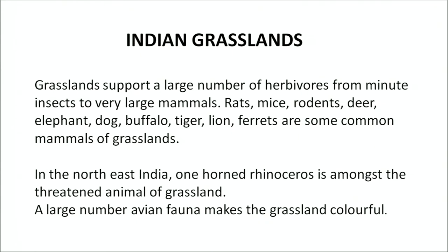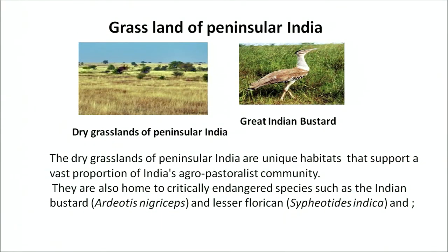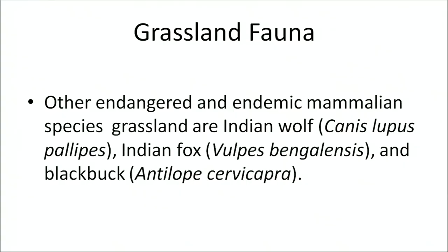In northeast India, the one-horned rhinoceros is an almost threatened animal of the grasslands and the government is taking measures to protect it. A large number of avian fauna make these grasslands colourful. The dry grassland of peninsular India supports a vast proportion of agro-pastoralist communities and is home to critically endangered species such as the Indian bustard and lesser florican. Other endangered endemic mammalian species of the grassland include the Indian wolf, Indian fox, and blackbuck.